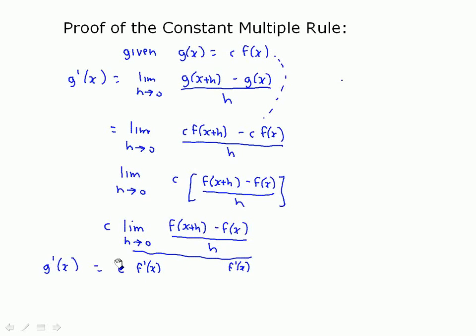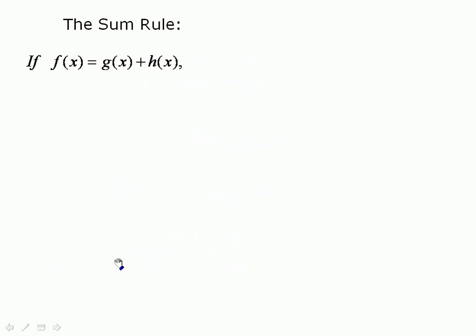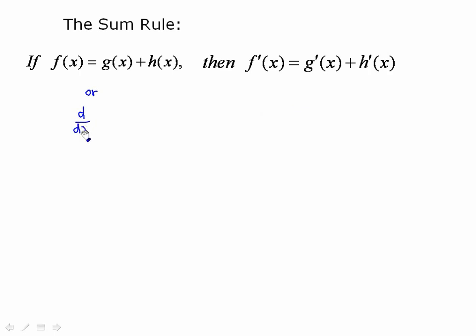Let's take a look at the sum rule. If f(x) equals g(x) plus h(x), then f'(x) is just equal to g'(x) plus h'(x). In Leibniz notation: d/dx of (u + v) is equal to du/dx plus dv/dx. So we're taking the derivative of u with respect to x plus the derivative of v with respect to x.